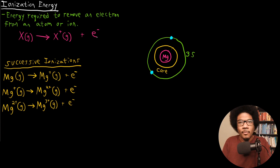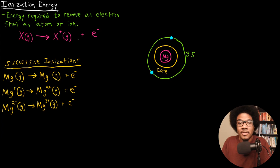We talked about this a little bit with the Bohr model. If you shine light of the right frequency on an atom, you can excite the electron. So this is how much energy it takes to not only excite that electron, but to completely liberate it from the atom and form the cation.